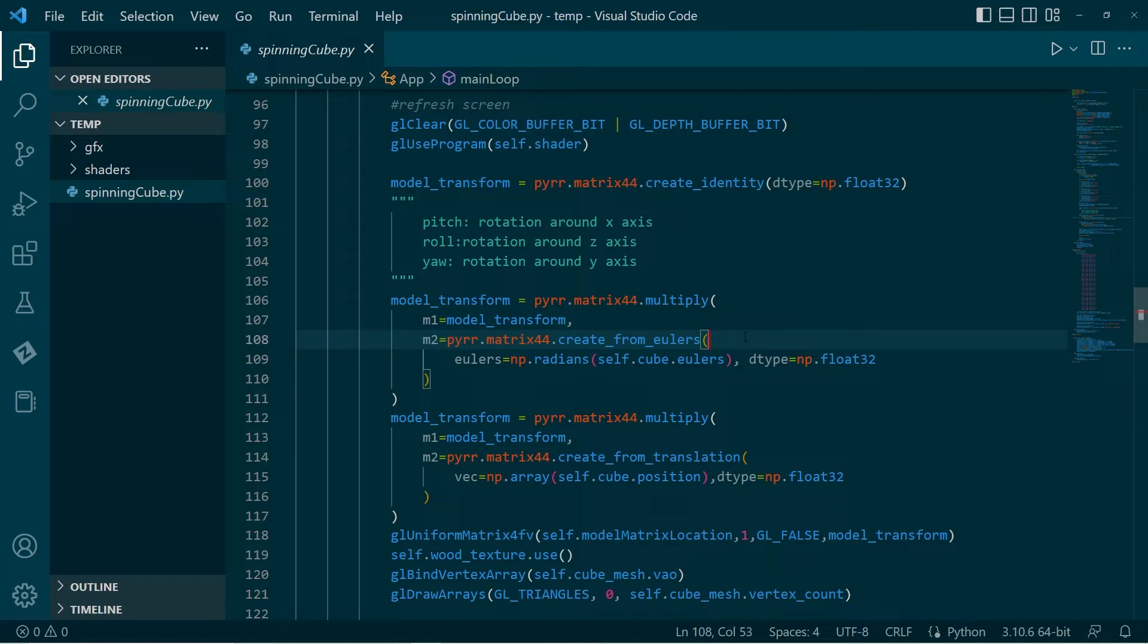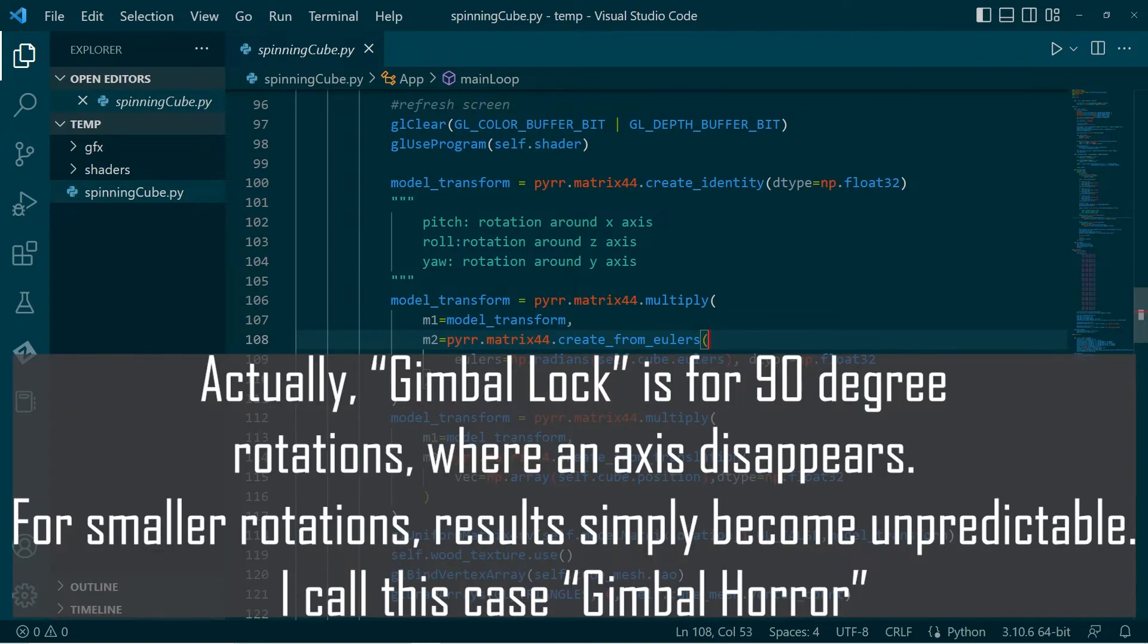But this is not good. It's not predictable. It's not good. So in general, the phenomenon where the axis of rotation moves along with the object is known as gimbal lock. And I mean, it's not good.